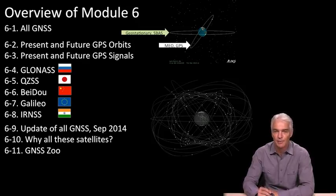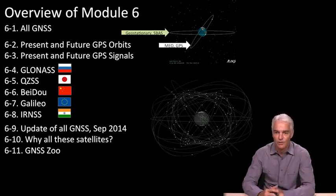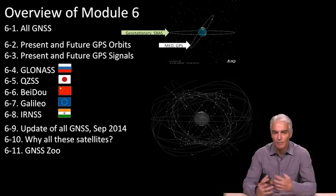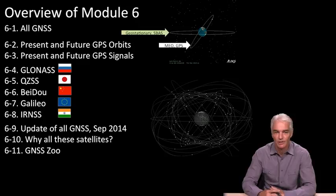And then finally, we'll end up with something I call the GNSS Zoo, which is a collection of all these different species of satellites and signals. And we'll bring them all together and finish the week on that.